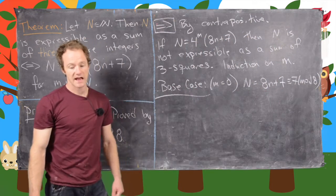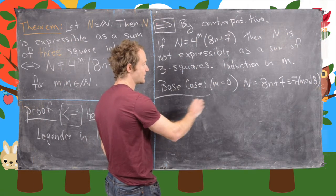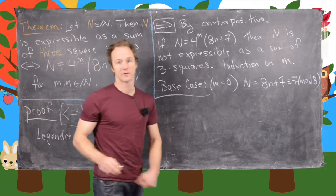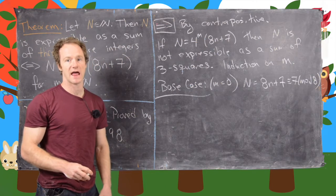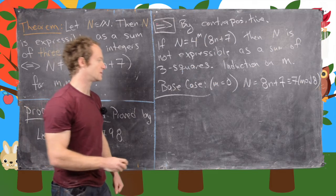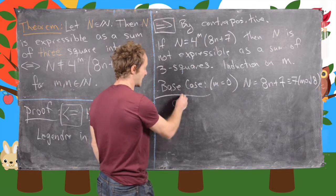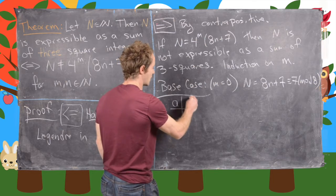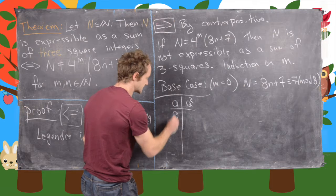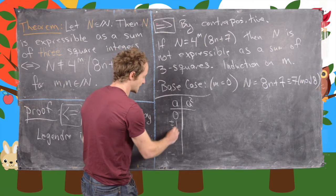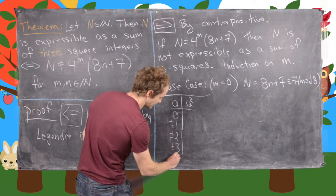The next thing we want to notice is that of the possibilities for perfect squares, there are only certain congruences mod 8 that are attainable. We'll look at that with a chart: a and then a squared, doing all of this mod 8. We need to look at a congruent to 0, ±1, ±2, ±3, and then 4.